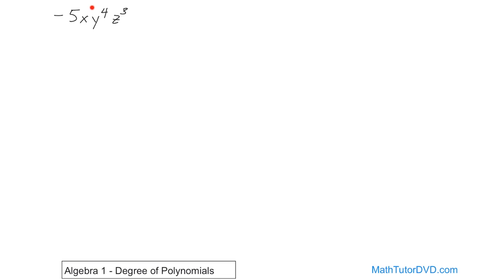Here you have x to the power of 1, y to the power of 4, and z to the power of 3. What you do is add them up for each term. So you take 1 plus 4 plus 3, and you get 8. So the degree of this monomial is 8.